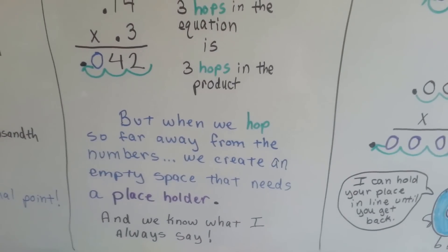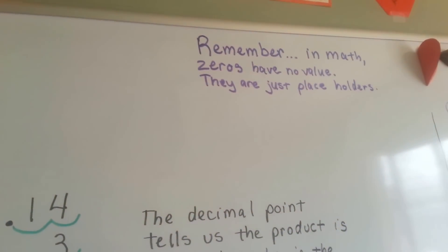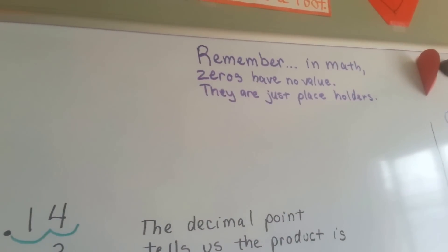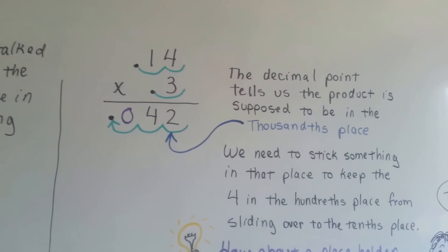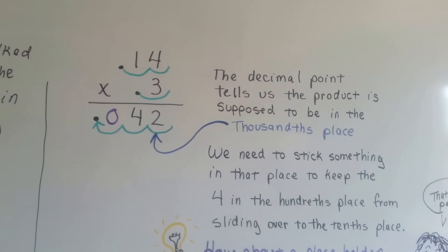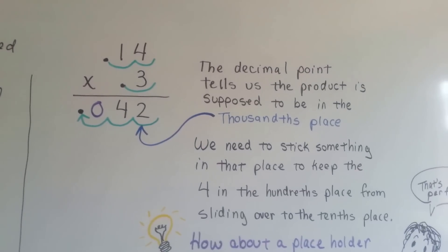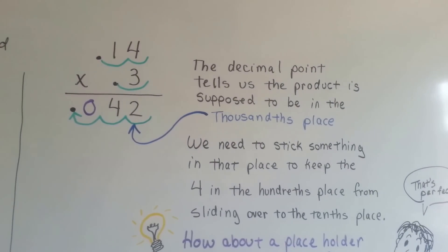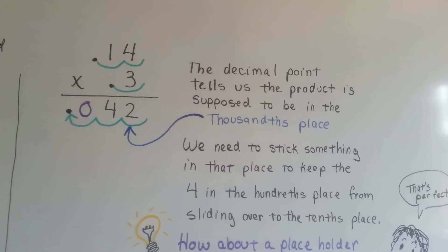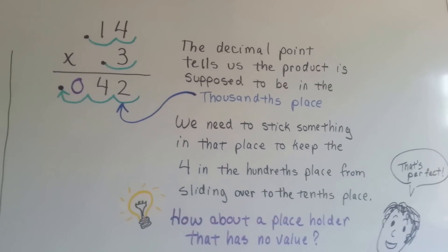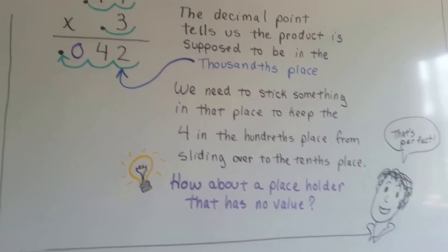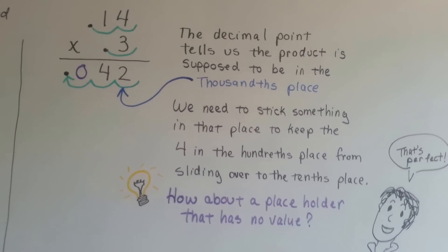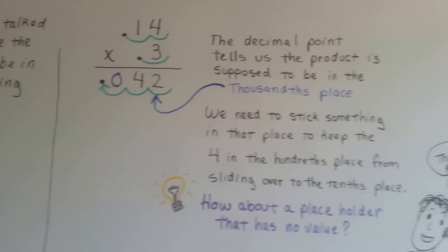And we know why I put a zero there, right? You know what I always say. You have to remember in math, zeros have no value. They're just placeholders. The decimal point tells us the product is supposed to be in the thousandths place. We need to stick something in that place to keep the four in the hundredths place from sliding over to the tenths place. Then the answer would be wrong. So how about a placeholder that has no value? That's perfect! Great idea! So we can stick a zero in there. That's the perfect thing to put in there.